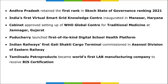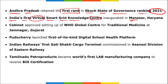Andhra Pradesh has retained first rank in SKOCH State of Governance Ranking for 2021. India's first virtual smart grid knowledge center was inaugurated in Manesar, Haryana. Also, at IMT Kharkhoda in Haryana, Maruti will be setting up a plant for electric vehicles — one of the largest EV plants in India.